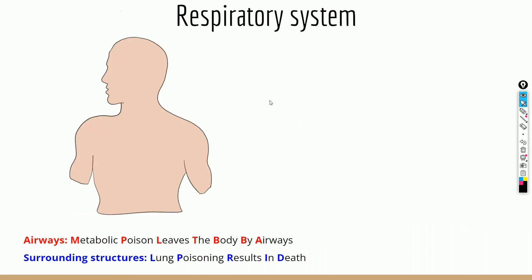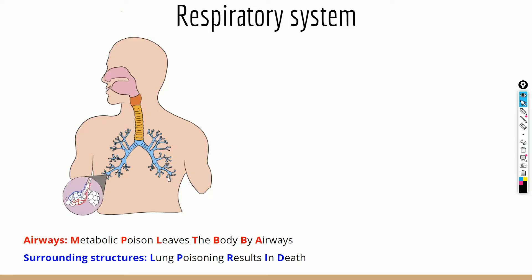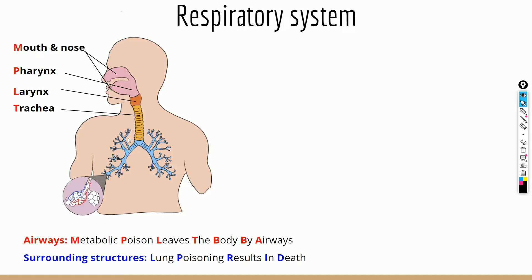Let's look at the airways first. Remember the acronym: Metabolic Poison Leaves The Body By Airways, in this specific order. M stands for mouth and nose, the initial entry point of air into the body, which connects to a space called the pharynx — basically another way of saying throat. L stands for larynx, otherwise known as the voice box, which contains vocal cords to produce sound.